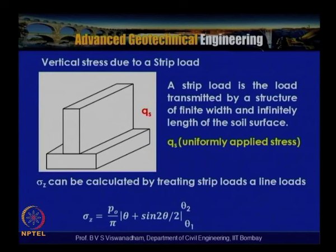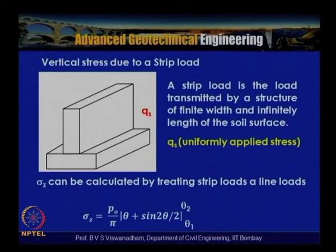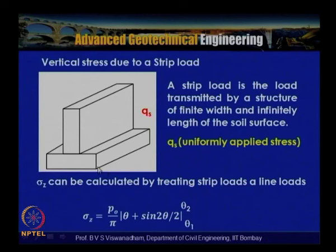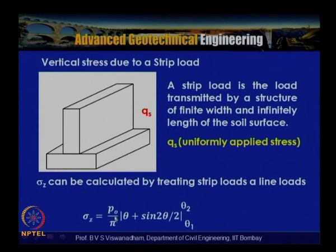Sigma_z = (p_0 / π) × (θ + sin(2θ)/2), evaluated between θ₁ and θ₂, where θ = θ₂ − θ₁ depends on the location of the point of interest. θ₁ is the angle from the left edge of the strip load to the vertical at the point, and θ₂ is from the right edge. So θ₂ − θ₁ is the angle subtended over the breadth of the foundation, and p_0 = q_s.